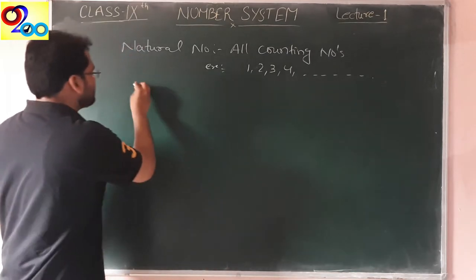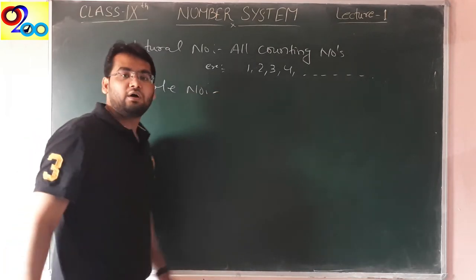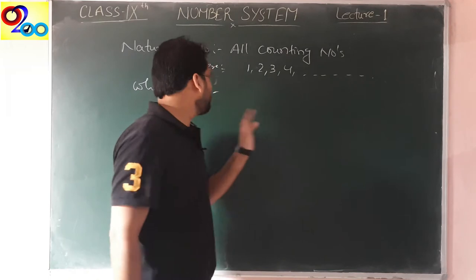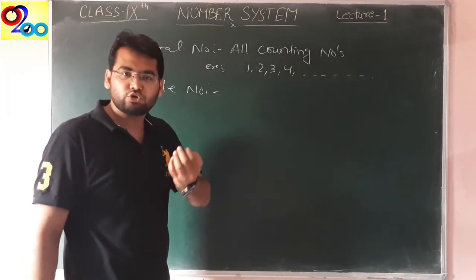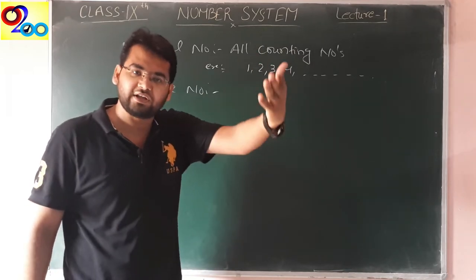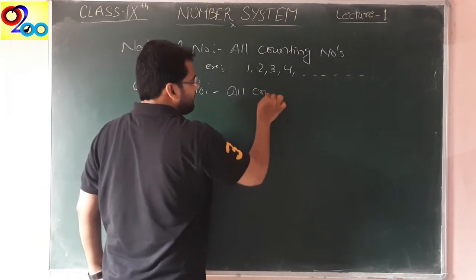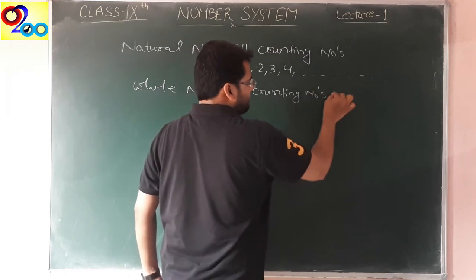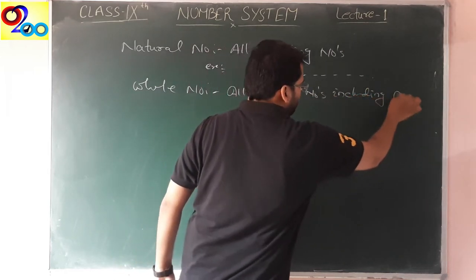The second thing is whole number. What is a whole number? All counting numbers including 0 are called whole numbers. That means: 0, 1, 2, 3 going to infinity — those whole numbers will come. All counting numbers including 0: 0, 1, 2, 3, 4 goes to infinity.